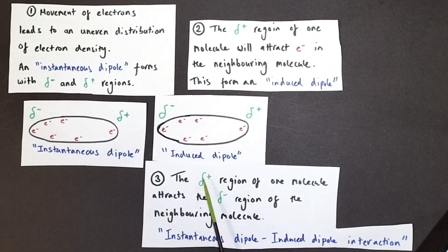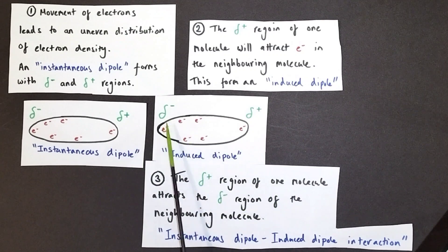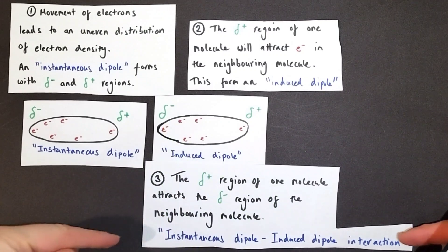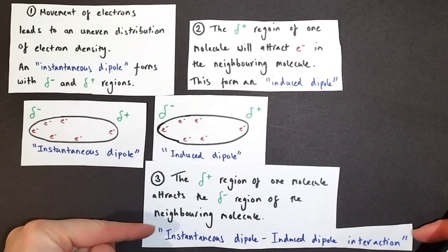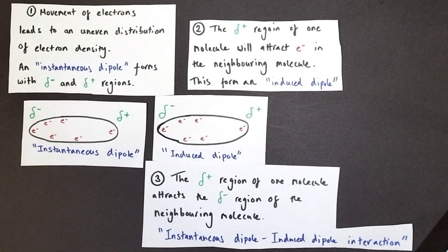So the delta positive region of our original molecule will now attract the delta negative region of the neighbouring molecule, and this creates an attraction known as an instantaneous dipole-induced dipole interaction.